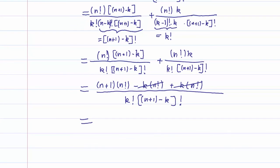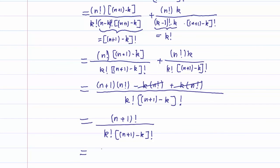And we have (n plus 1) times n factorial, which is (n plus 1) factorial, over k factorial times (n plus 1 minus k) factorial. As you can see, this is the definition of C(n+1, k). So we have shown that C(n,k) plus C(n,k-1) equals C(n+1,k).